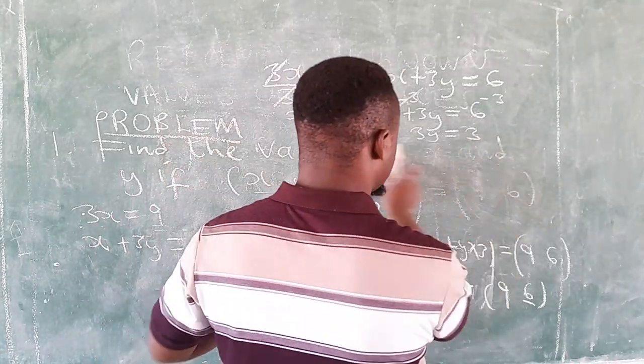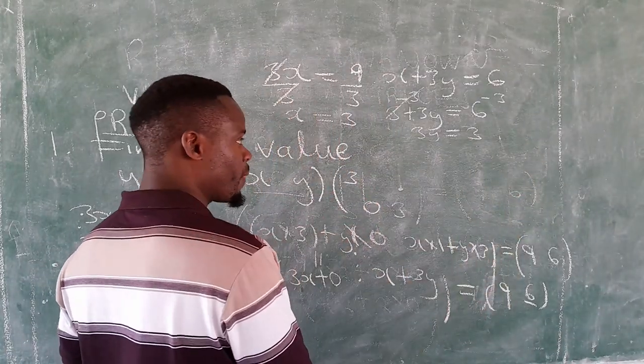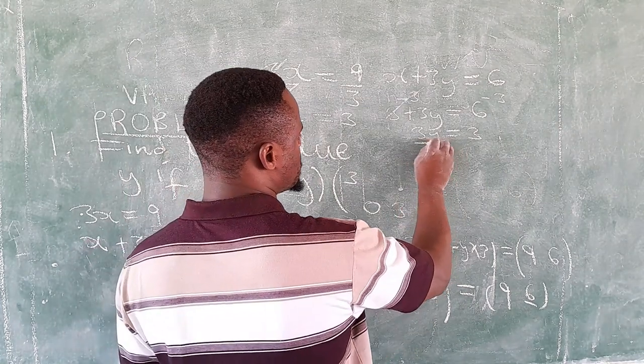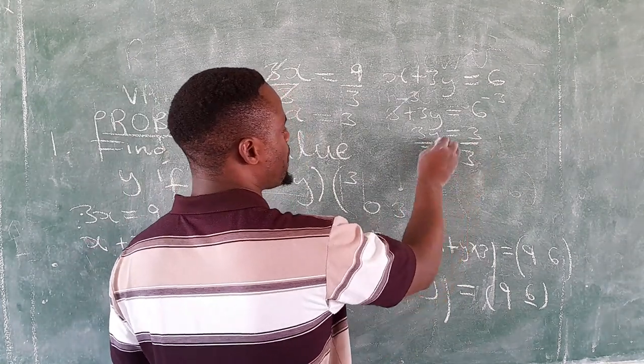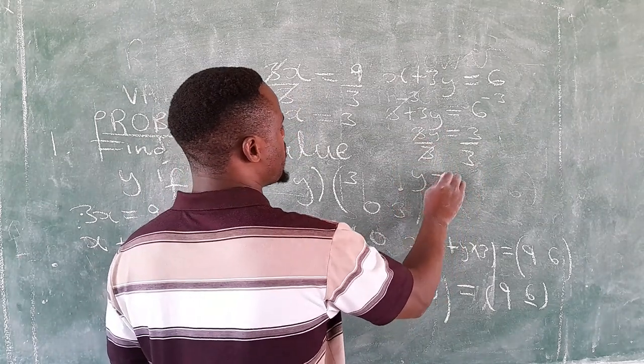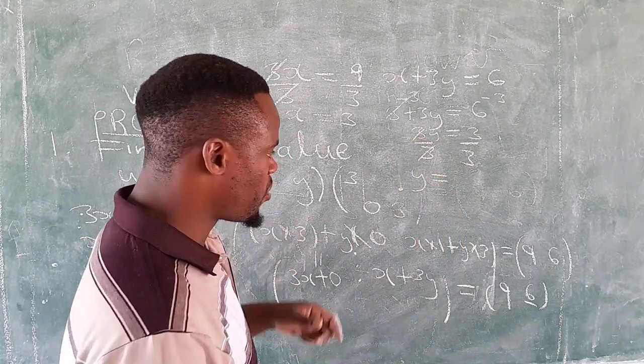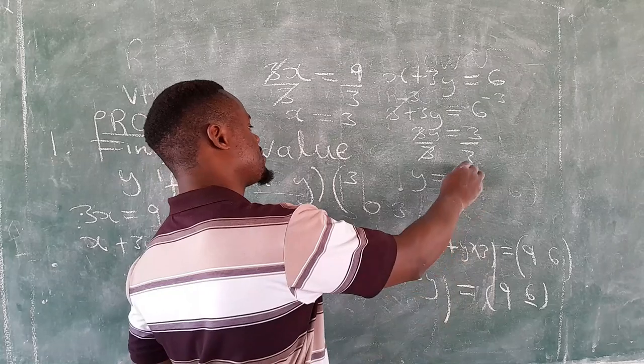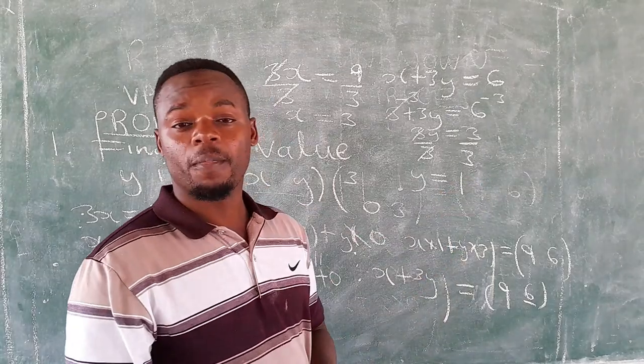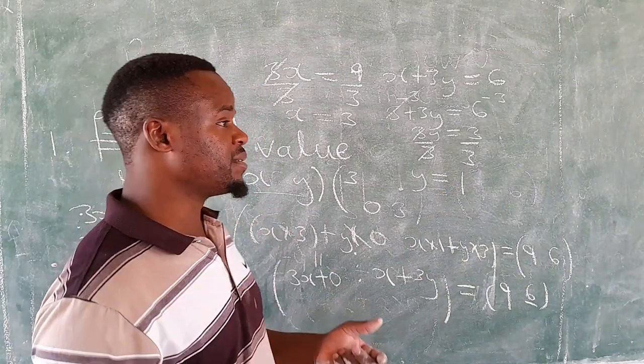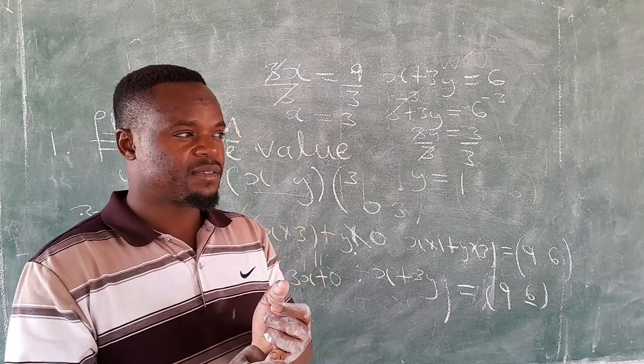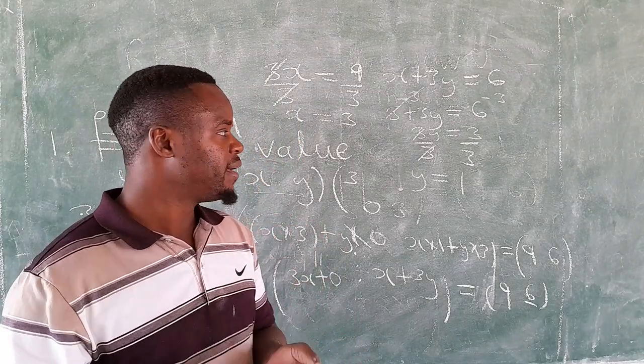So we are going to remain with 3y which is equal to 6 minus 3, that is 3. Now what is the value of y? So what we do is we divide both sides by 3, and we're going to have y is equal to 3 into 3 that gives us 1. So we have actually determined the values of x and y. So this is how we go about these things, pretty simple.